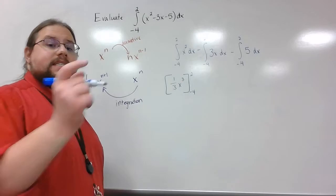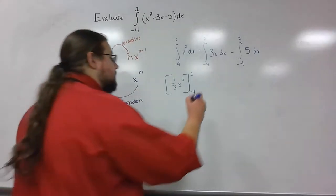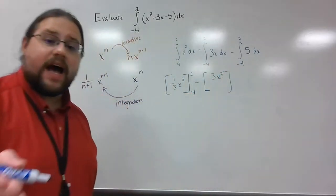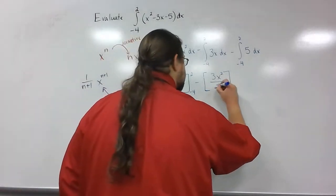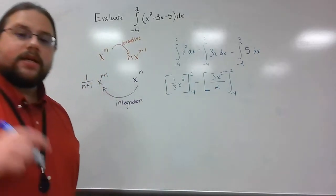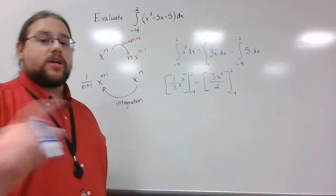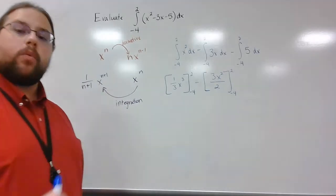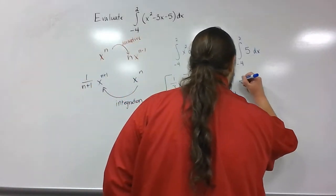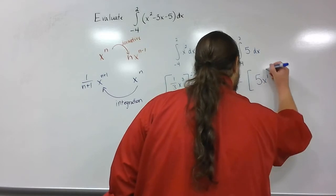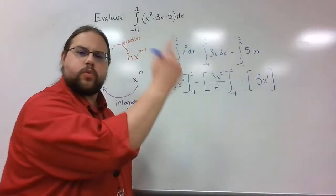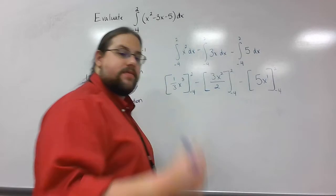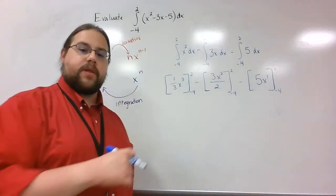For the next term, that's 3 times x to the first. I kick the exponent up by 1 — and we're still subtracting — so that becomes 3x squared. I divide by the new exponent, which is 2, giving 3x squared over 2, evaluated from negative 4 to 2. For the last part, 5 has no x, so it's x to the 0. I bump it up by 1 to get 5x to the first, then divide by 1 — which doesn't change anything. I just evaluate 5x between negative 4 and 2.